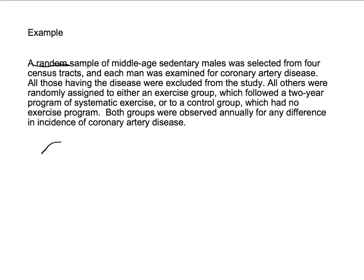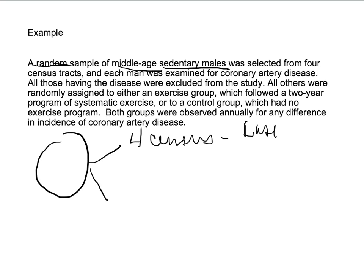Is it a randomized trial? We start with a population chosen from four census tracts, which is population-based sampling. They then applied exclusion criteria — anyone who is not male, not sedentary, and not middle-aged would not be included. So among people from these four census tracts, they picked out the middle-aged sedentary males as the first group of participants. These participants were then examined for coronary artery disease — those with disease were excluded, and those without disease were retained.